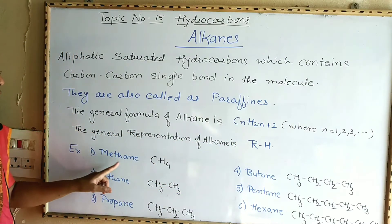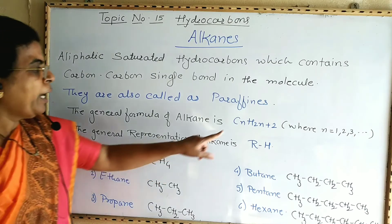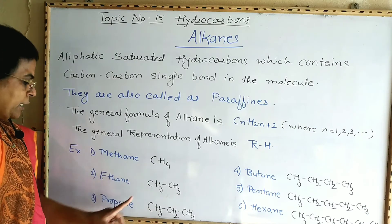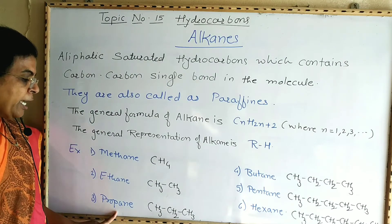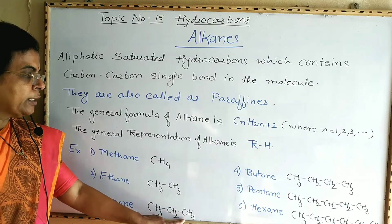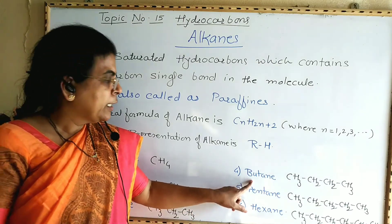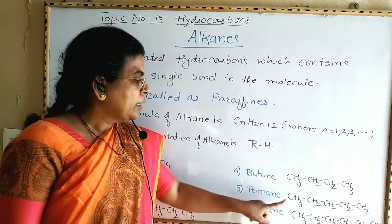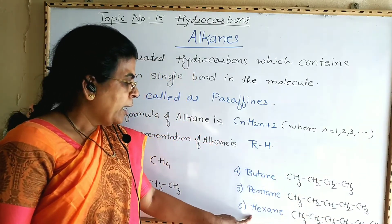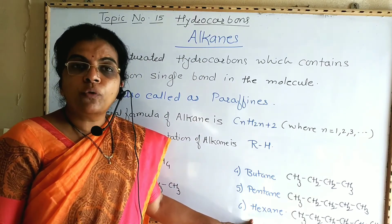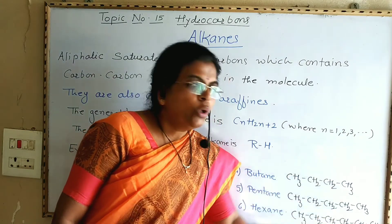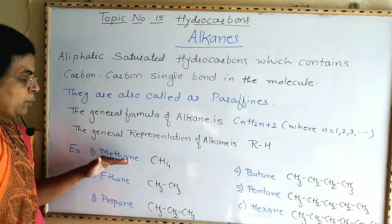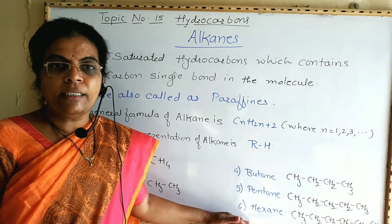For example: methane, molecular formula CH₄, where N equals 1. Ethane is C₂H₆ or CH₃CH₃. Propane is C₃H₈, that is CH₃CH₂CH₃. Butane is C₄H₁₀, that is CH₃CH₂CH₂CH₃. Pentane is C₅H₁₂, that is CH₃CH₂CH₂CH₂CH₂CH₃. Hexane is C₆H₁₄, that is CH₃CH₂CH₂CH₂CH₂CH₃. These are the six members of the homologous series of alkanes, from methane to hexane. You can write all members up to decane, that is C₁₀H₂₂.